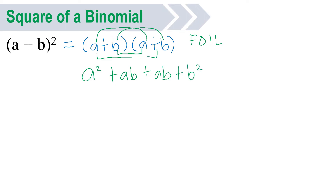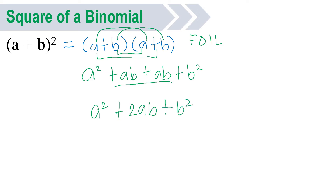This is how we solve for it using the FOIL method. Then after that, you have to combine the like terms. Just copy a squared. Then ab plus ab gives you positive 2ab. And then copy positive b squared. This will be your answer.